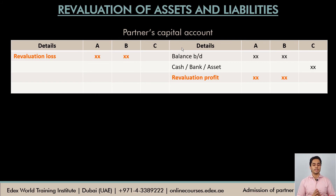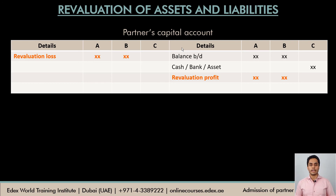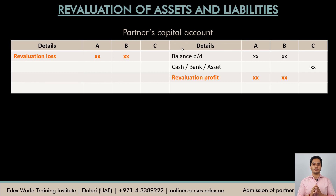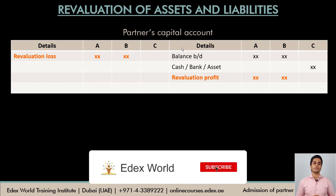I hope you understood the concept of revaluation of assets and liabilities — why it is done and how it is done. In the next video, we will cover the goodwill adjustment entry and then see a solved example that will give you a clear picture of all the entries to be done at the time of admission of a new partner. If you enjoyed the video, please like and share it with your friends, subscribe to the channel, and press the bell icon. See you soon with a new video.